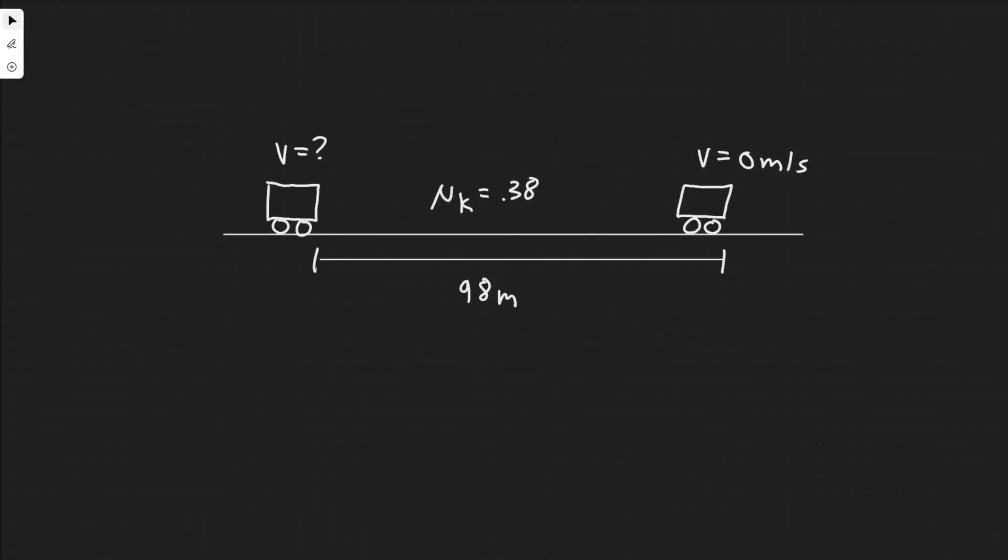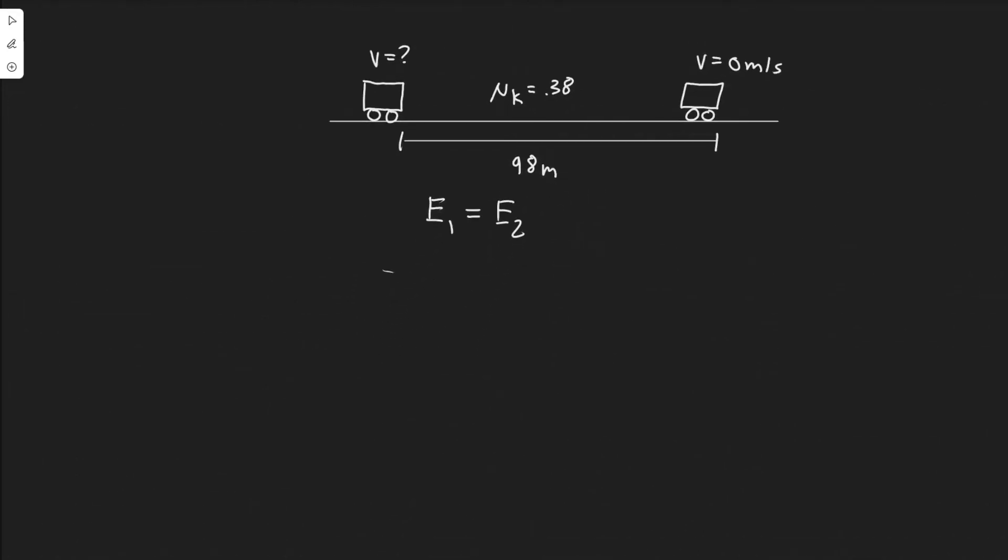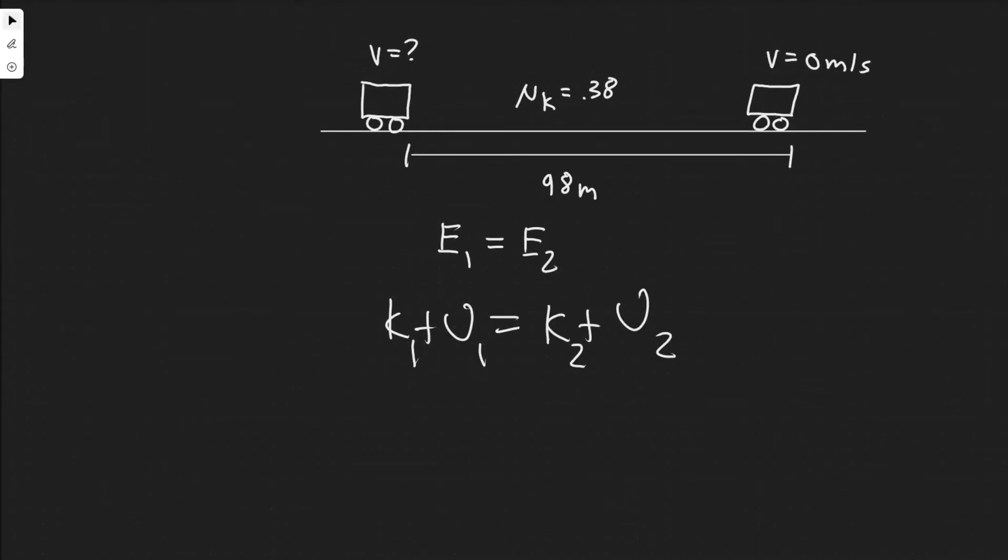We're going to solve this by using the law of conservation of energy, which tells us the energy at the beginning of the interval, E1, has to equal the energy at the end of the interval. The way this works is you add the kinetic energy K plus the potential U, and that's equal to the kinetic plus the potential at the end. So K1 + U1 = K2 + U2.